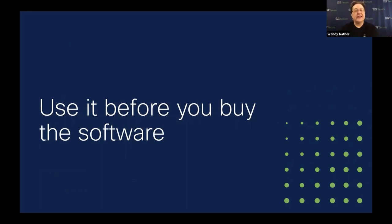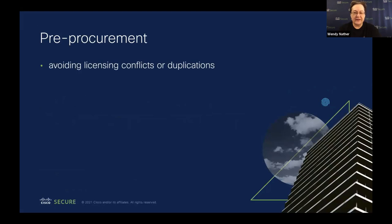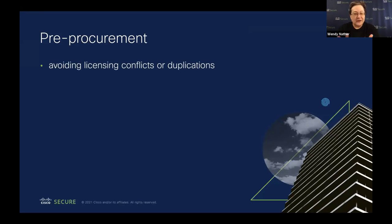Use it before you buy this software. Let's talk about pre-procurement. What are you going to do with an SBOM in the pre-procurement phase? There are some things that don't even necessarily have anything to do with security that you're going to be using SBOMs for, like avoiding licensing conflicts — we can't incorporate something with this particular licensing into our own software, that's an immediate no. Or you may have multiple business units that you discover through duplicate SBOMs are all procuring software from the same vendor, and you might want to renegotiate that deal to save some money. These things could be very useful from a business perspective in your organization.